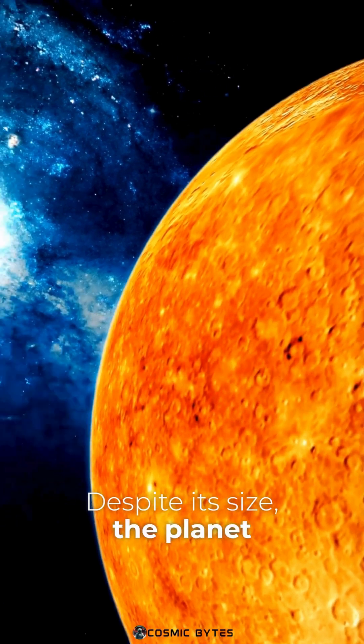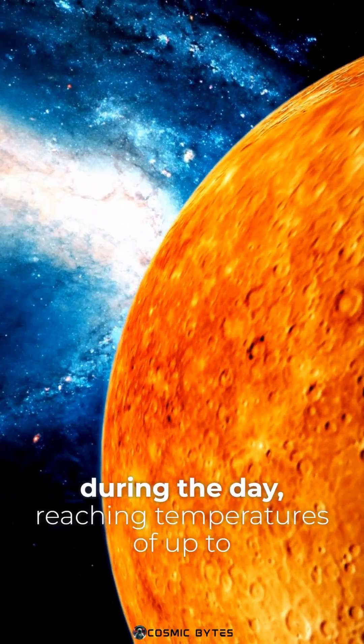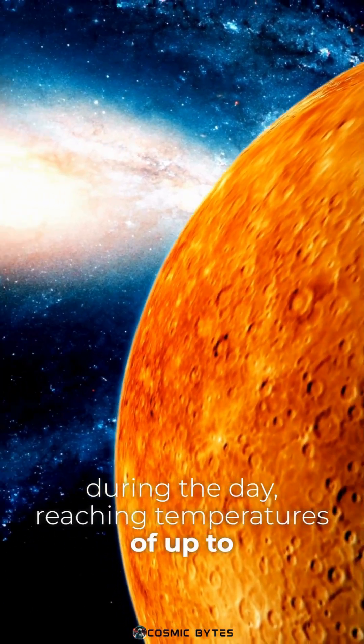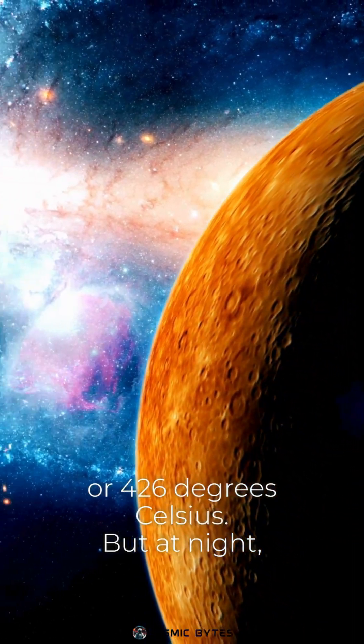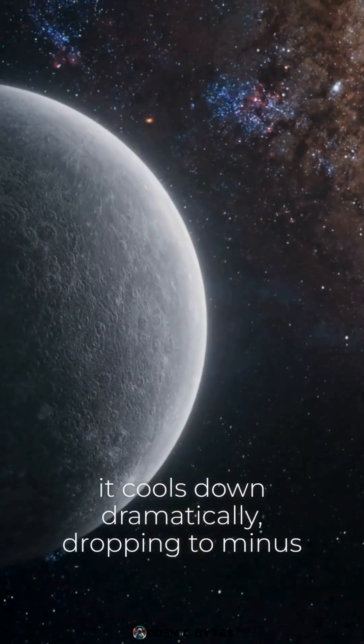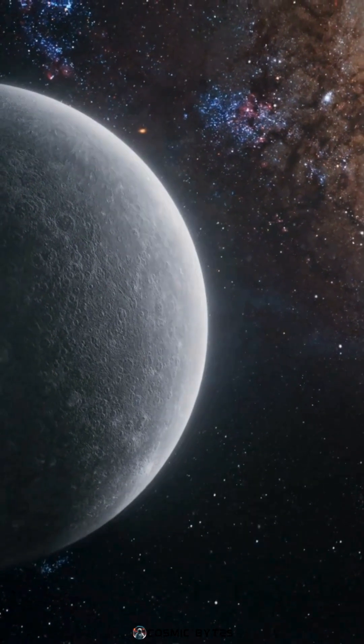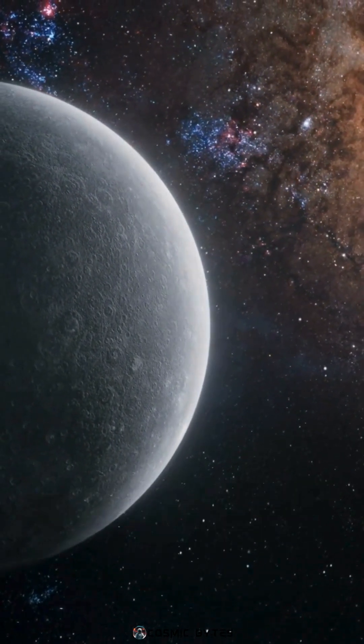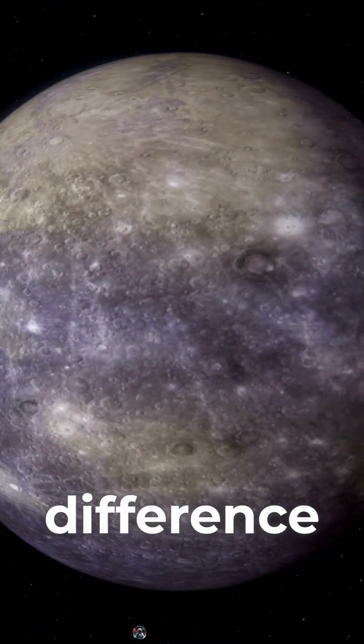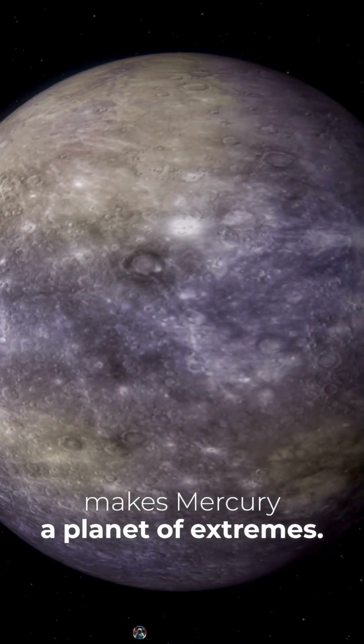Despite its size, the planet Mercury becomes incredibly hot during the day, reaching temperatures of up to 800 degrees Fahrenheit or 426 degrees Celsius. But at night, it cools down dramatically, dropping to minus 290 degrees Fahrenheit or minus 179 degrees Celsius. This extreme temperature difference makes Mercury a planet of extremes.